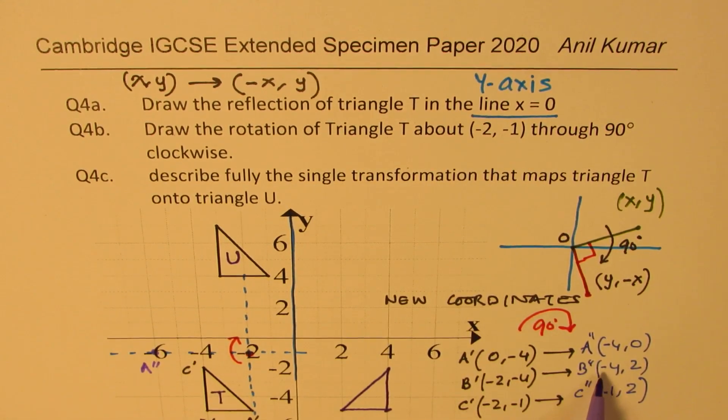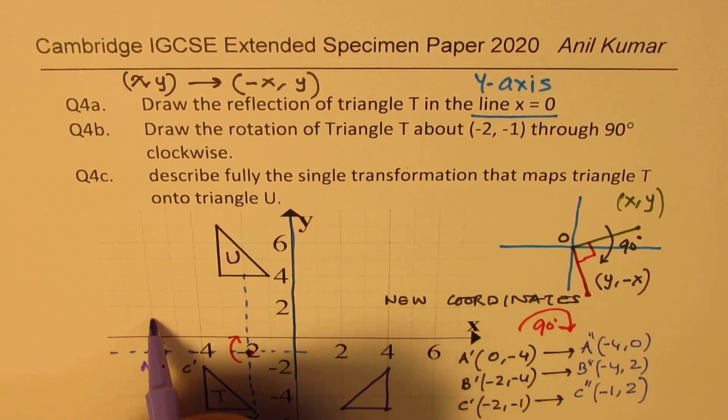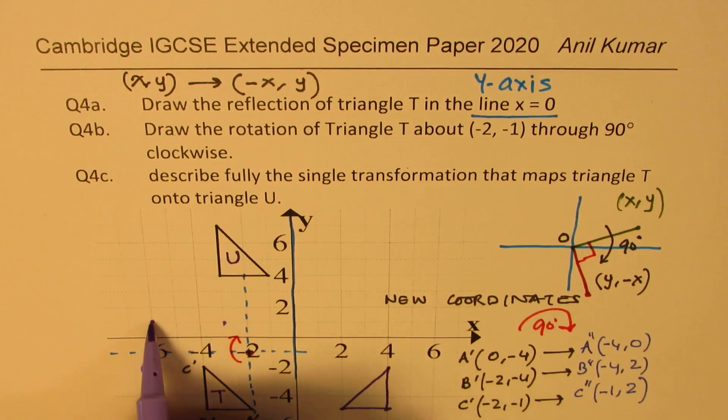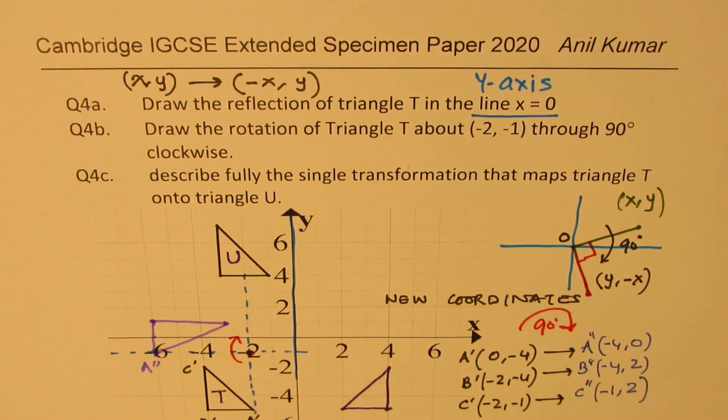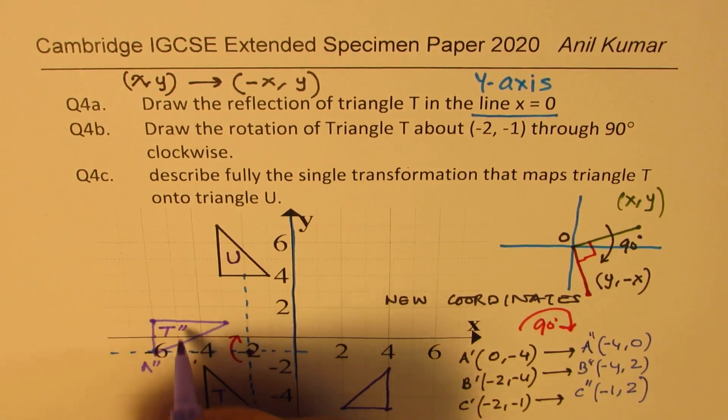B double dash is minus 4, 2. So from here, we'll go 2 units up. And C double dash is minus 1, but this value is 2. So from here, just one away right there. So we have our new triangle, which has been rotated clockwise by an angle of 90 degrees. Does it make sense? We'll call this T double dash.